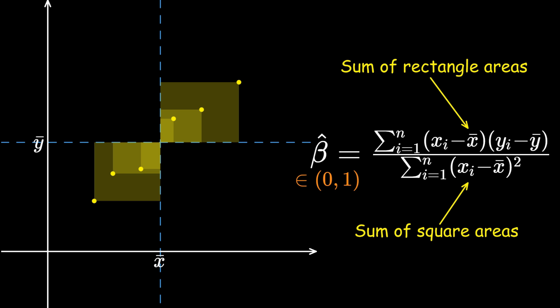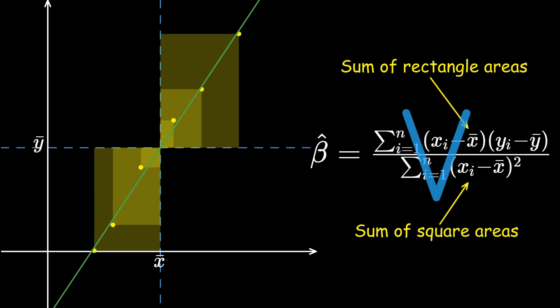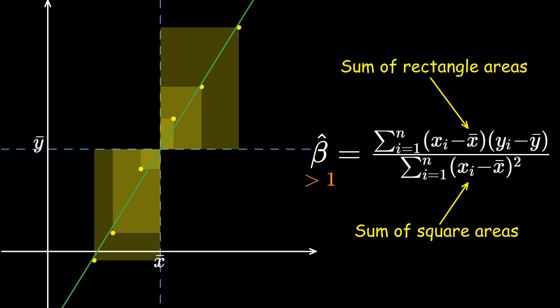Visually, we see that the slope of the regression line is rather flat. In contrast, if the y-coordinates of the points are more spread out, then the rectangle areas will be greater than the square areas. As a result, beta hat is greater than 1 and the regression line gets steeper.